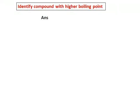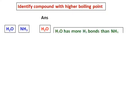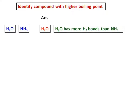Identify the compound with the higher boiling point. You are given a combination of two compounds and have to find out which will have a higher boiling point. The first combination is water and ammonia. Both form hydrogen bonding, but water has more hydrogen bonds than ammonia, and therefore water has a higher boiling point.